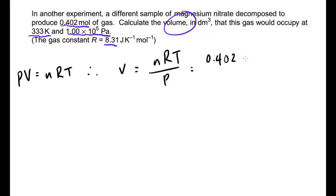So, 0.402 times my 8.31 times my temperature. Different temperature this time. Not 298. It doesn't matter. Use the temperature given. Divided by my pressure, which is 1 times 10 to 5, which is actually just 100,000. I think they just like to do it just to confuse you. When we work that out, we'll get to a volume of 0.0111242 blah, blah, blah. But remember that's meters cubed. We need to convert.